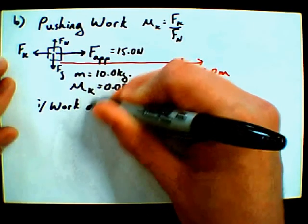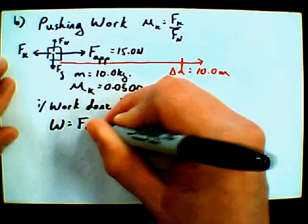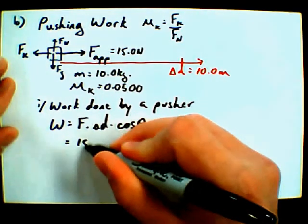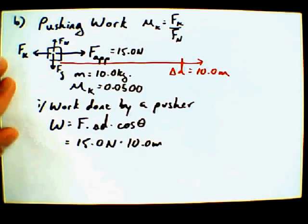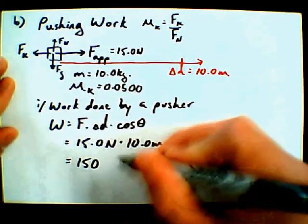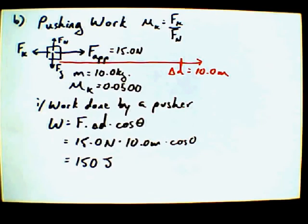So, subpart I, work done by a pusher. Work is equal to force times displacement times cosine of theta between those two vectors. The force applied is 15.0 newtons. The displacement is 10.0 meters. And the angle between the applied force and the displacement is zero. So, we can say, cosine of zero. We're just talking about the work done by the pusher. So, we're being very careful about the question we're asking right now. So, the work done by the pusher, what's the answer? 150.